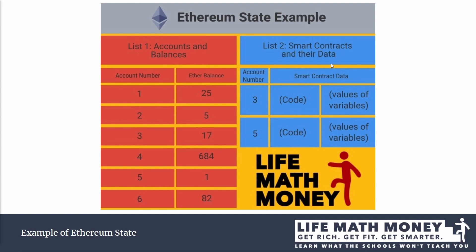Smart contracts have the same rights that accounts owned by humans do. They are just operated using the code stored in them — they execute code and do what the code asks them to do. They have the same power and the same rights that externally owned accounts have.